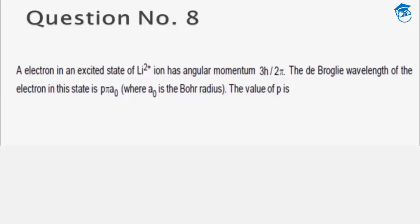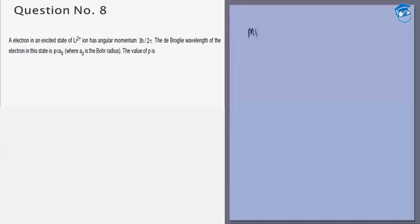The next question: we have given that an electron in an excited state of lithium has angular momentum 3h by 2π. We know that MVR, which is the angular momentum, is NH by 2π according to Bohr quantization rules, which means the orbital n is equal to 3.